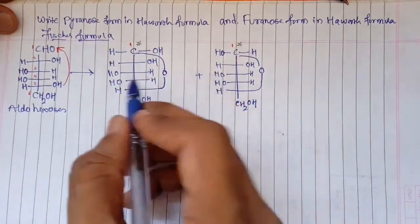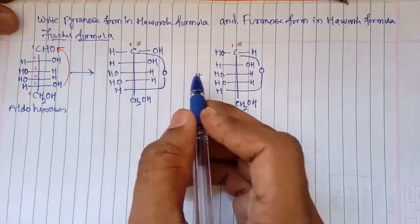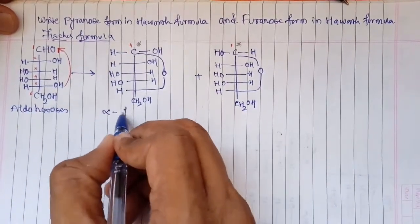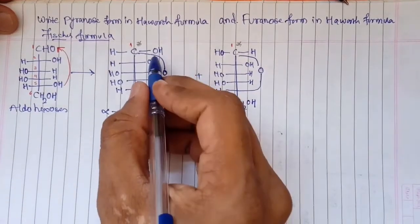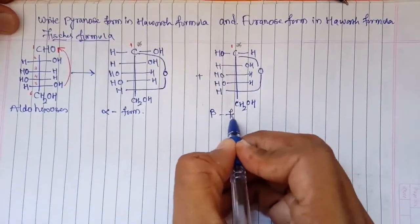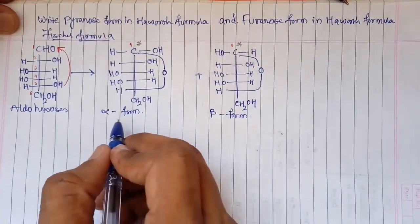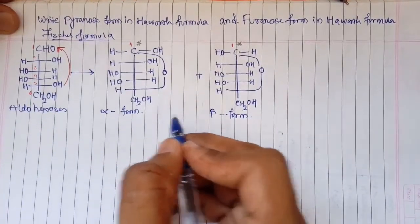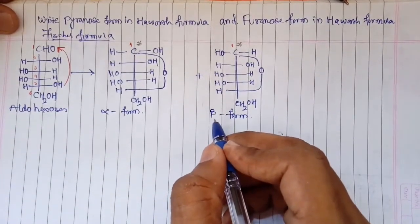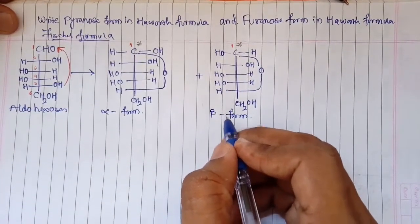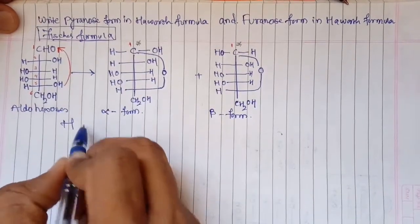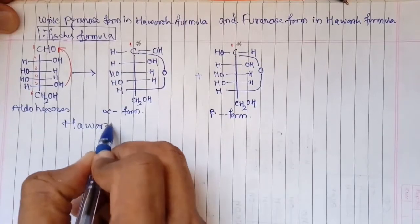There are two stereoisomers of the ring structure. The one having OH on the right hand side will be called the alpha form, and this one will be called the beta form. So whatever the name, it will be prefixed by alpha or beta depending on the structure. Now let us see how to write the Haworth formula.